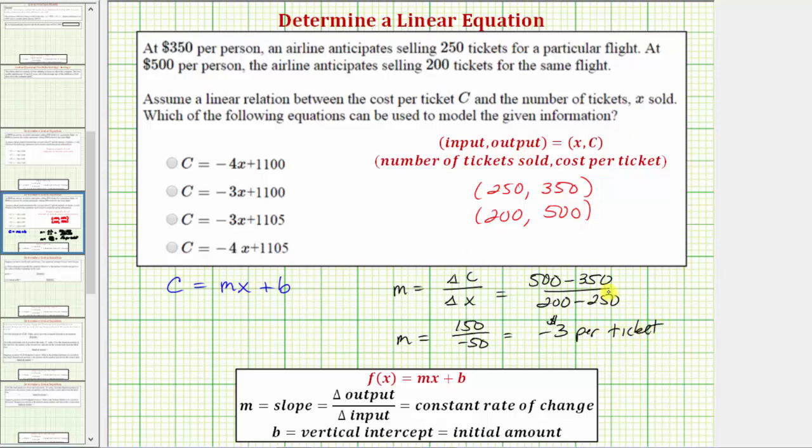To understand what this means, let's write the slope as a fraction. We can write M equals negative three dollars per one ticket, which means if the cost per ticket decreases by three dollars, the number of tickets sold will increase by one. Now we know the slope M is equal to negative three.